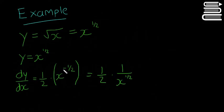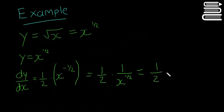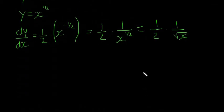That's more indices — if you have x to the power of minus something, that's the same as one over x to the power of that something. And x to the power of a half we've seen earlier is the same as the square root of x. So that's going to be one over two times one over square root of x, so our final answer is one over two root x.